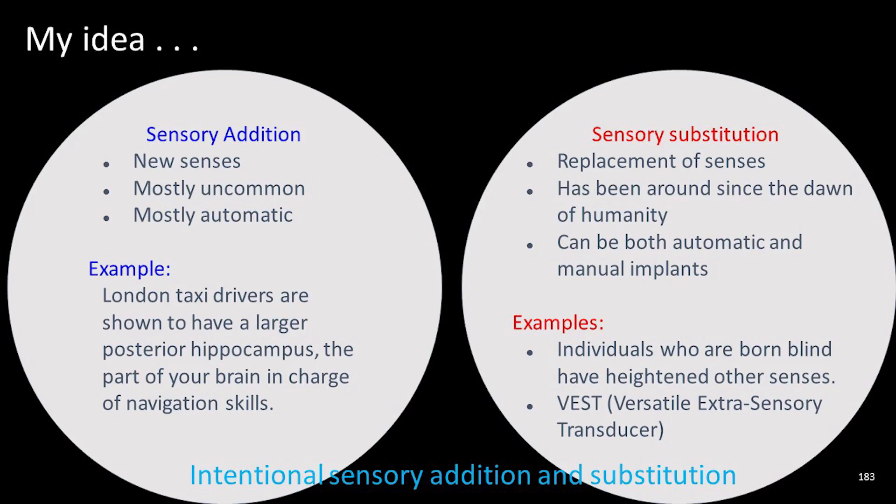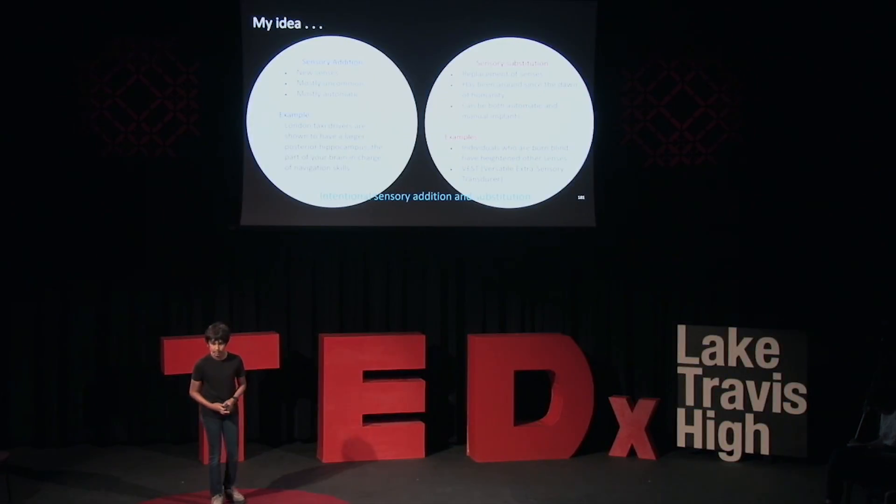Sensory substitution is a really similar idea, but it's a replacement of senses. It's been around forever and can be both manual and automatic. Individuals who are born blind have heightened other senses. For example, if you're blind, your hearing will be a lot better. This is because the part of your brain that deals with the visual cortex — the part dealing with sight — is actually invaded by your other senses, providing more space for those senses to work. And this is another example of neuroplasticity.